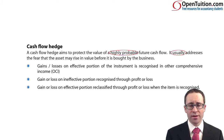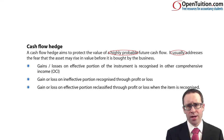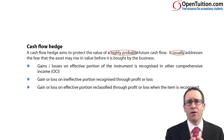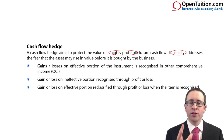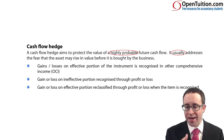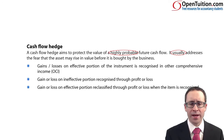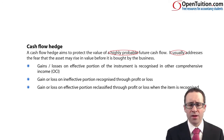It usually addresses the fear that the asset may rise in value before it is bought by the business. If you're looking to buy a new non-current asset or buy some commodity to put into inventory, then the fear is of a price rise. Cash flow hedging usually addresses the fear of a rise in price — we're always thinking about buying the asset. If you have that fear that the asset will rise in value, you have a cash flow hedge, and you need to identify the accounting treatment.